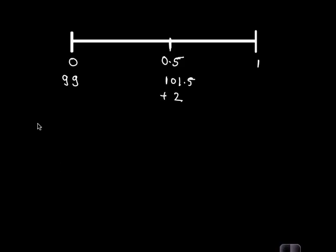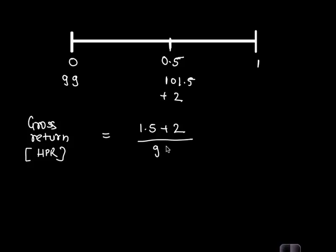We want to find out what is the gross return that we have been able to earn on the bond, and you can think of this number as simply the holding period return (HPR). We would say how much are we really earning. There is a capital appreciation component of 1.5 plus the coupon component of 2, and the amount invested is 99, so whatever that number is, that is your gross return. Now let us assume that this 99 was actually a borrowed amount.